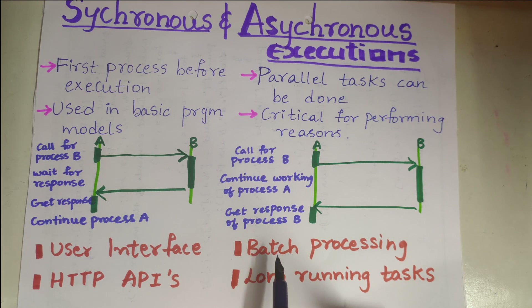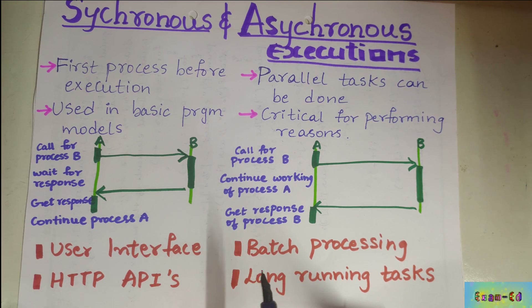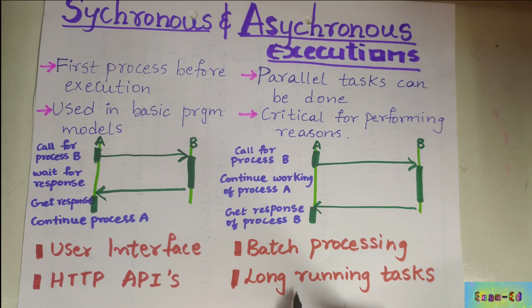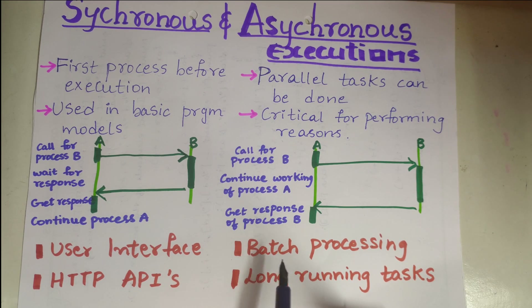In asynchronous execution, common use cases include batch processing and long-running tasks. Batch processing handles large amounts of data asynchronously, and long-running tasks do not need to block or wait for resources that are already executing.